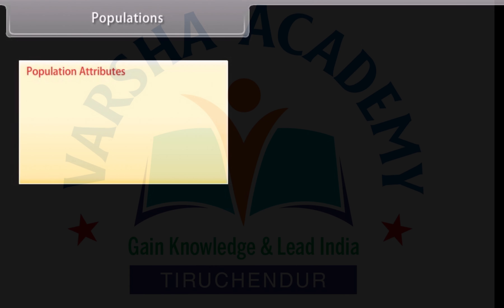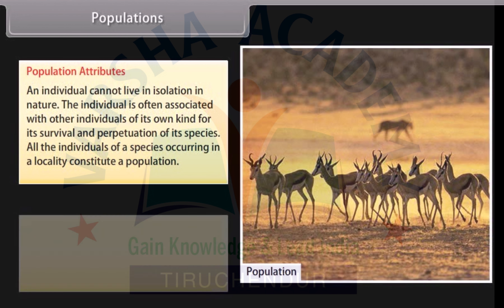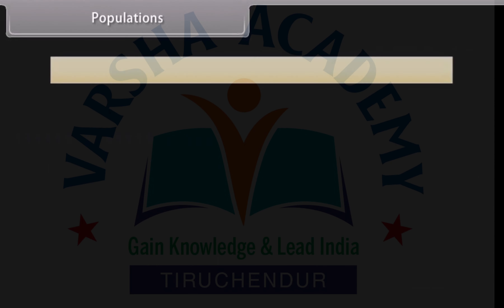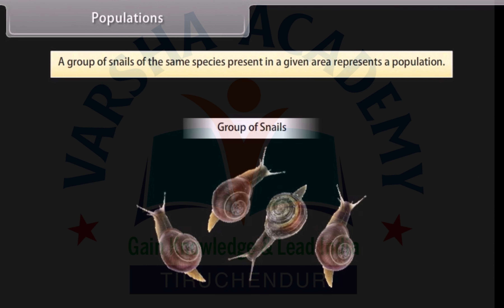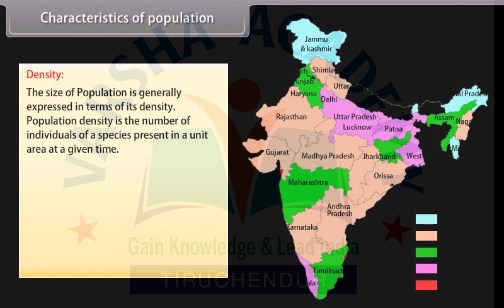Populations: An individual cannot live in isolation in nature; the individual is often associated with other individuals of its own kind for its survival and perpetuation of its species. All the individuals of a species occurring in a locality constitute a population. In ecology, a population is a group of individuals of the same species inhabiting the same area and functioning as a unit of a biological community. A group of snails of the same species present in a given area represents a population. The size of a population is generally expressed in terms of its density.